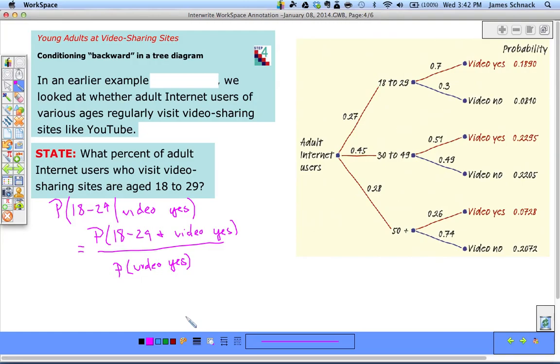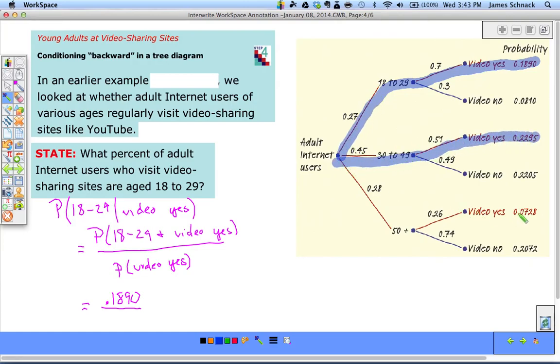When we're doing this, we get our information right out of our tree diagram. So 18 to 29 and video yes, that's 0.1890, divided by the probability that the person does visit video sites. Let's see where that is in the tree. It's actually three different places: that branch of the tree, that branch of the tree, and that branch of the tree. That's this entire denominator.